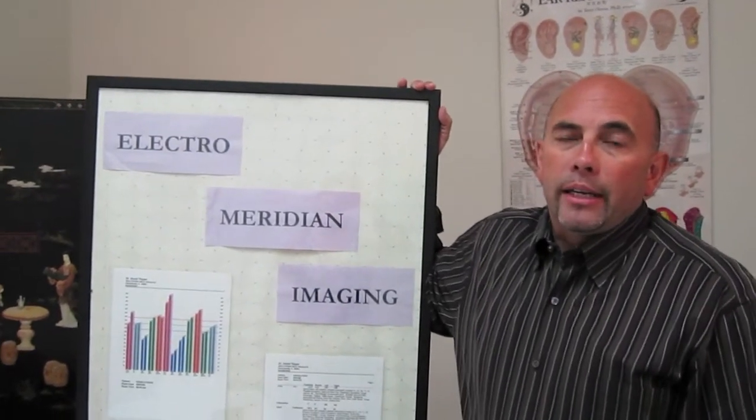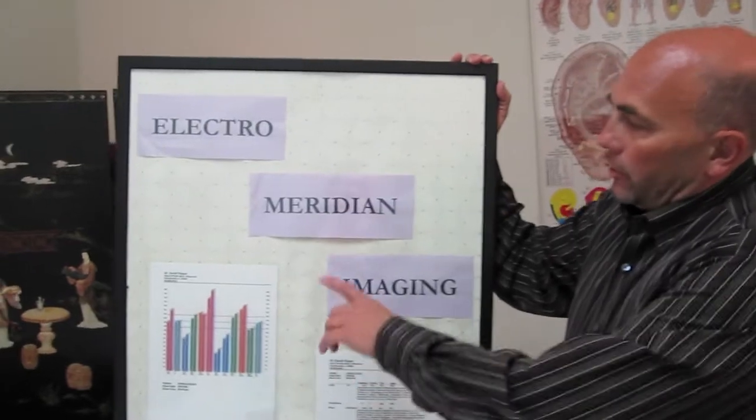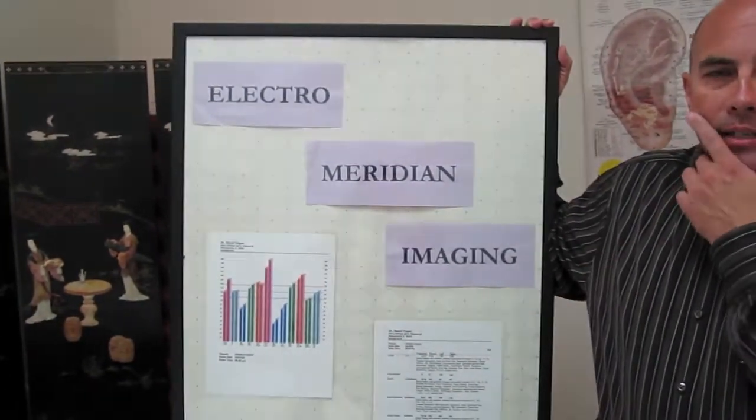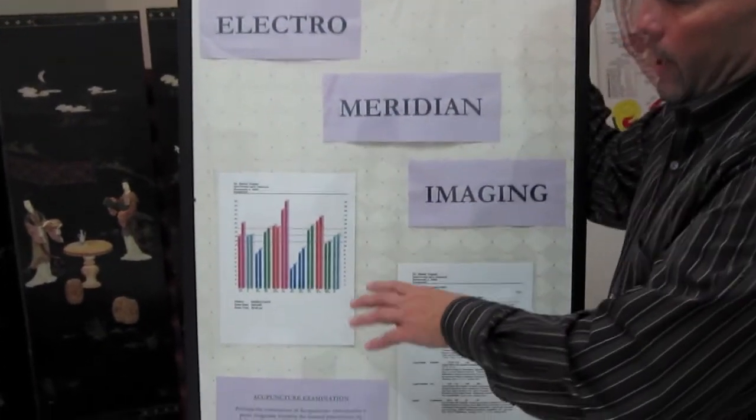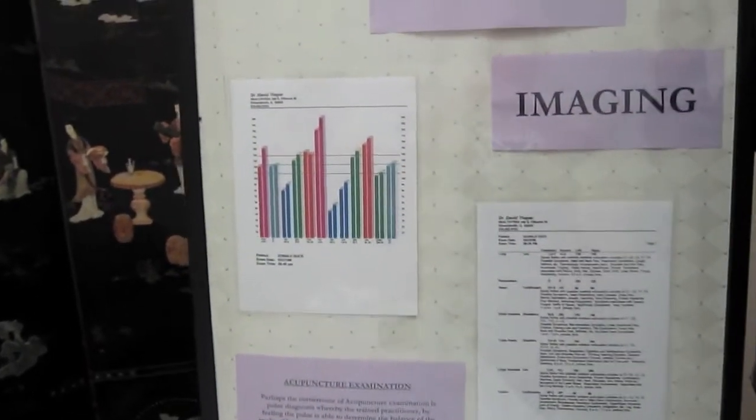So what we do in cases like that is we use this procedure called Electro-Meridian Imaging. It's a test where we actually measure the acupuncture meridians to see where you're out of balance.